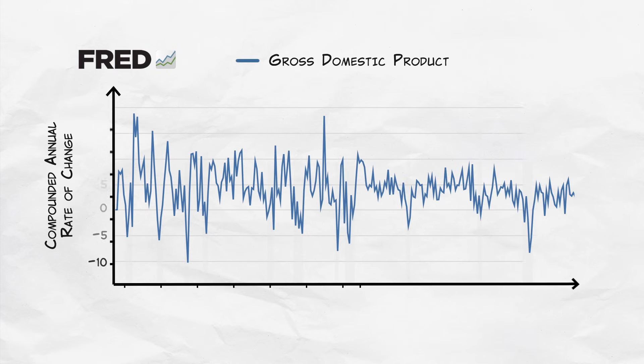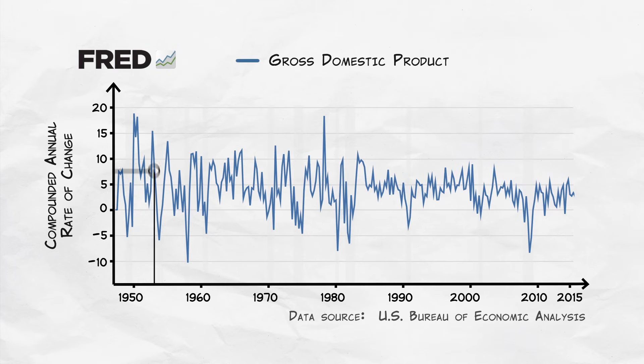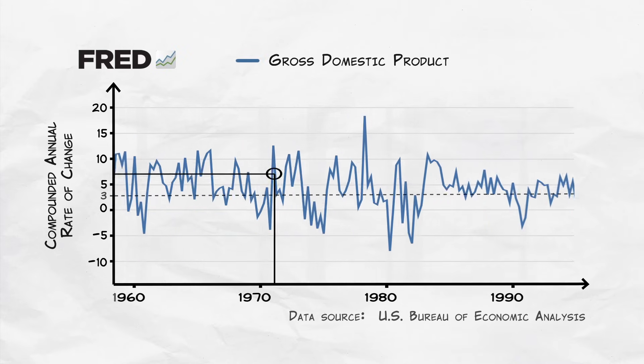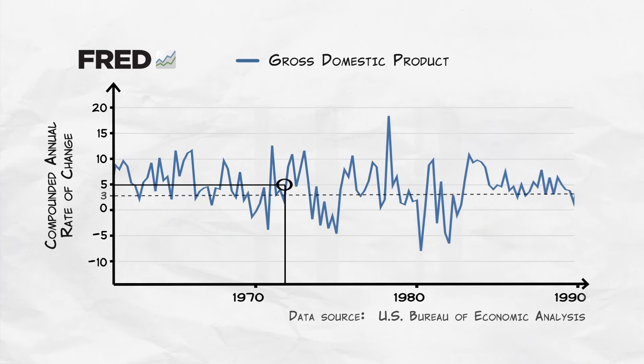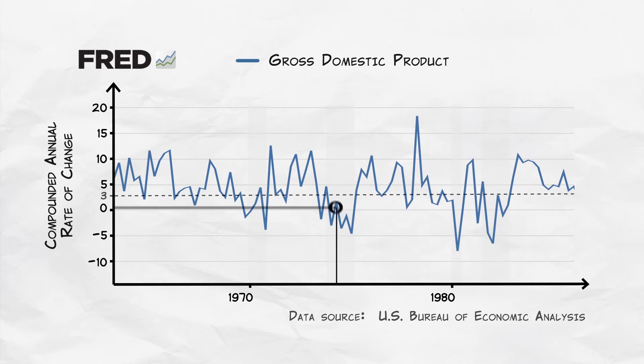How can we use this simple model to help us understand business fluctuations? Let's revisit how the U.S. economy has grown over time. On average, it grows at a rate of about 3% per year, but there are lots of fluctuations around this average. One reason is that there are shocks to the key growth factors — shocks that continually buffet the economy.